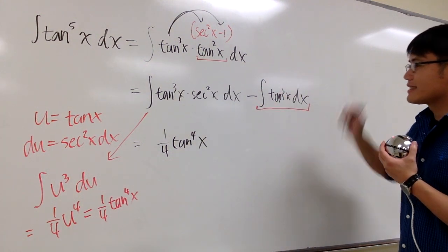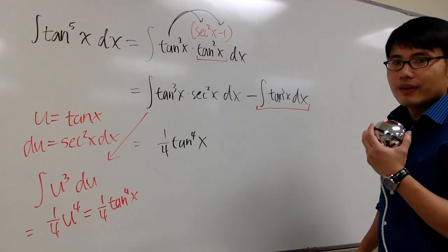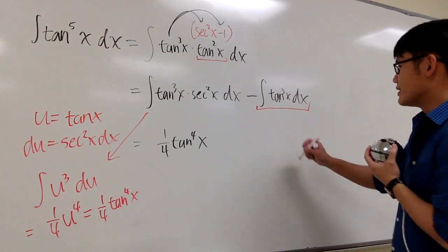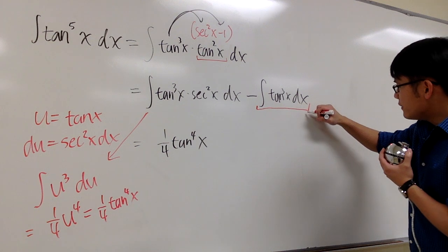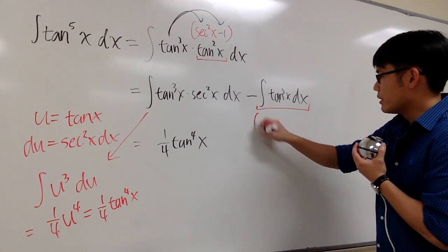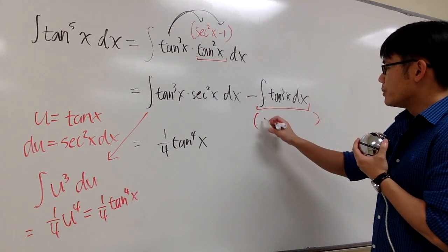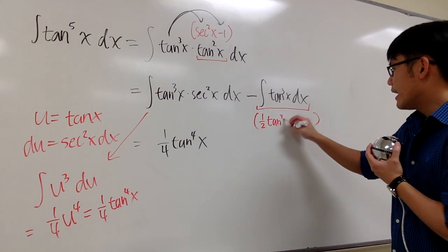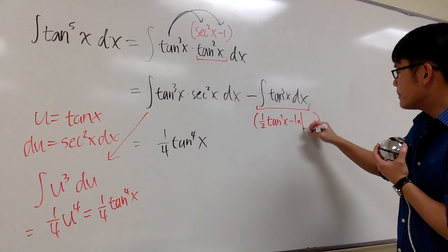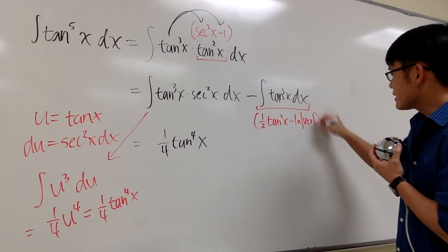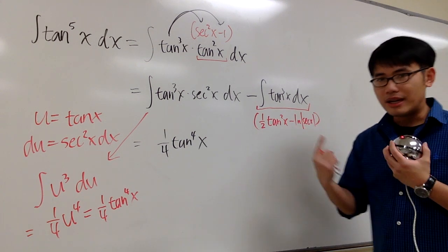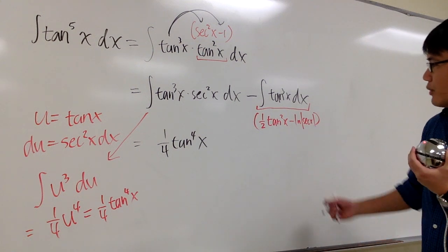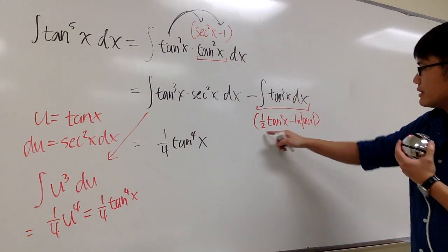Integral of tangent to the third power, which we already did that. And let me just tell you what the answer is for that. The answer for this, let me just put it down below here. This is going to be 1 half tangent squared x minus ln absolute value of secant x. And you can check out my other video, maybe right here, for that, for the detailed solution for this. So the integral of tangent to the third power is this.